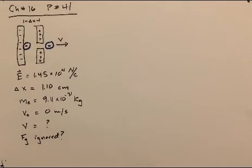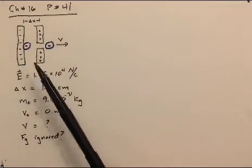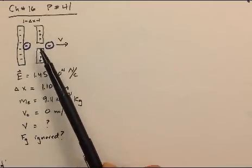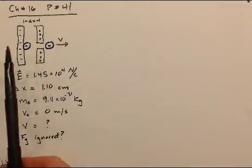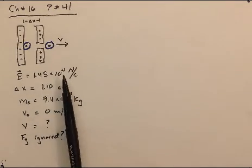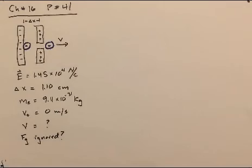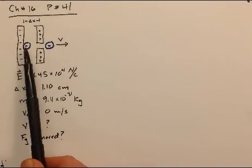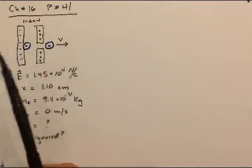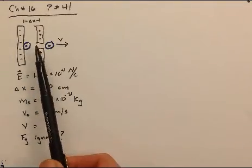Let's start out with what the problem tells us. It tells us we have a plate, a conductor, that's negative over here and positive over here, and that there is an electric field between these plates of magnitude 1.45 times 10 to the 4th newtons per coulomb. Now, this electron would be accelerated this way, right, repelled from the negative, attracted to the positive plate here.